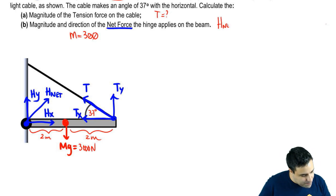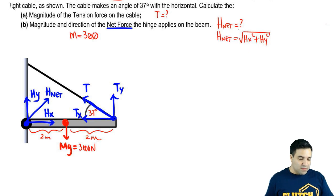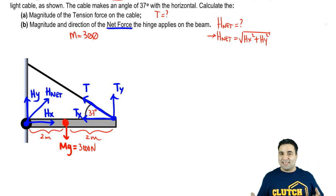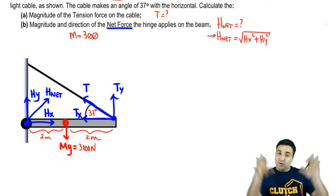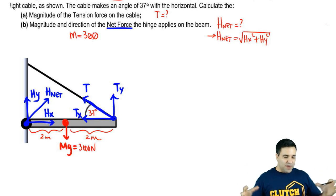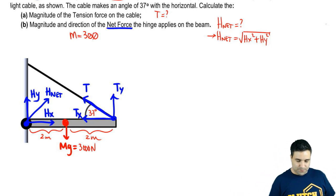Now, net force on the hinge is a combination of Hy and Hx. You have Hy this way, Hx this way. They're going to combine to form H net. And that's what we want to know. H net will simply be, we're looking for H net. The net force by the hinge will simply be the Pythagorean of its components. So Hx squared plus Hy squared.